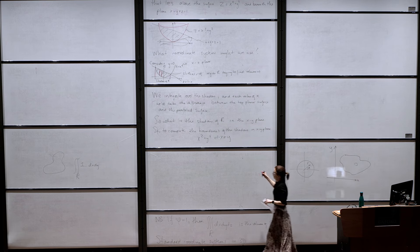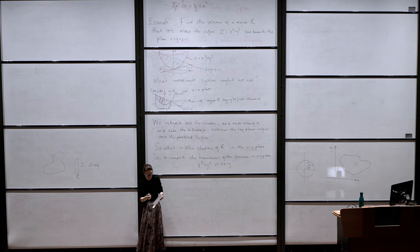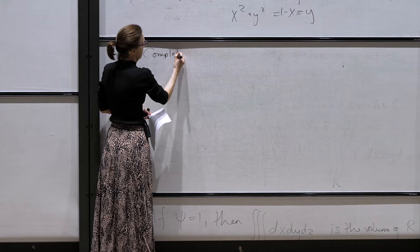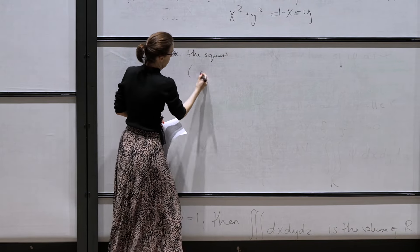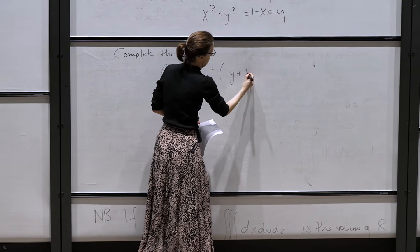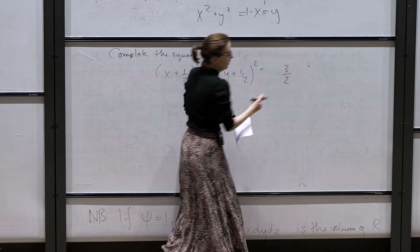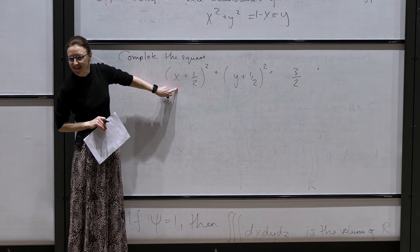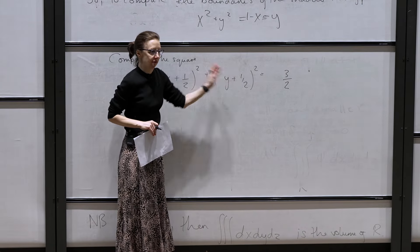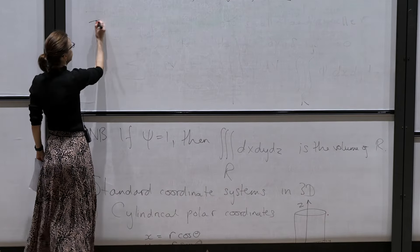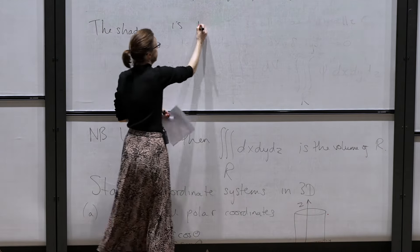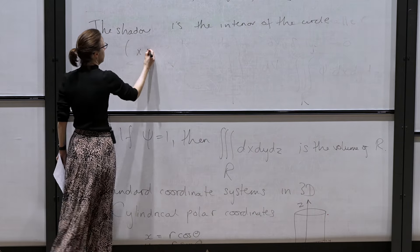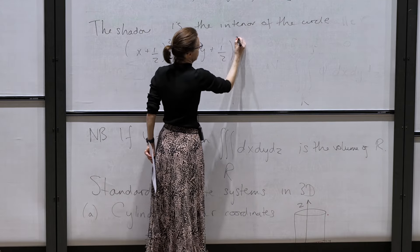If I rearrange and complete the square, I can rewrite x² + y² = 1 - x - y as (x + 1/2)² + (y + 1/2)² = 3/2. That's completing the square. And that shape is a circle, centred at (-1/2, -1/2). So the shadow is the interior of the circle (x + 1/2)² + (y + 1/2)² = 3/2.